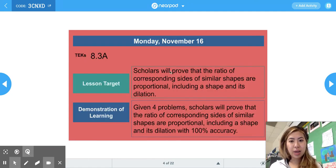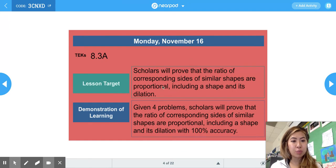Today's TEKS is 8.3a. And our lesson target is that scholars will prove that the ratio of corresponding sides of similar shapes are proportional, including a shape and its dilation. And then given four problems, scholars will prove that the ratio of corresponding sides of similar shapes are proportional with 100% accuracy for the DOL.